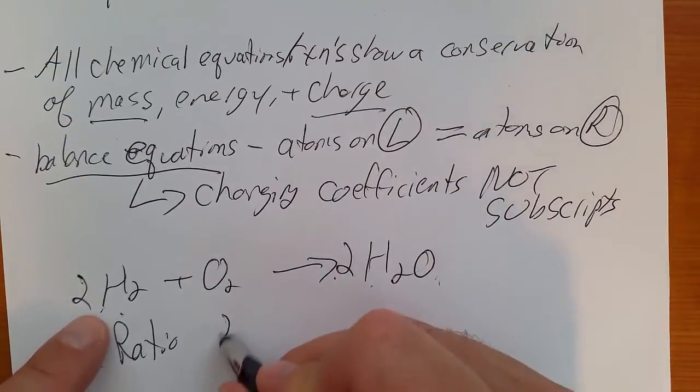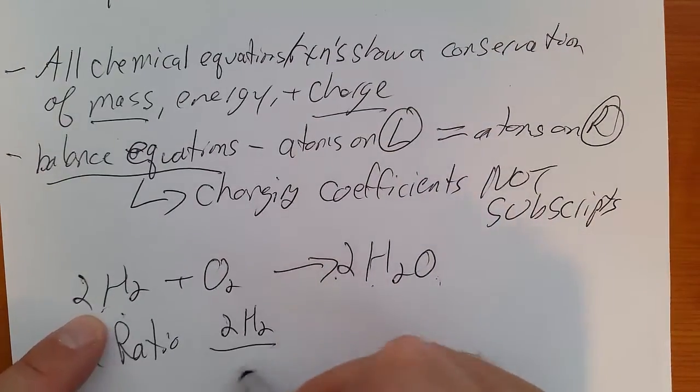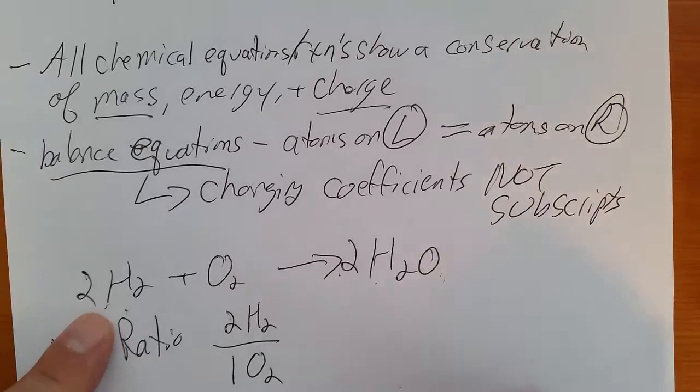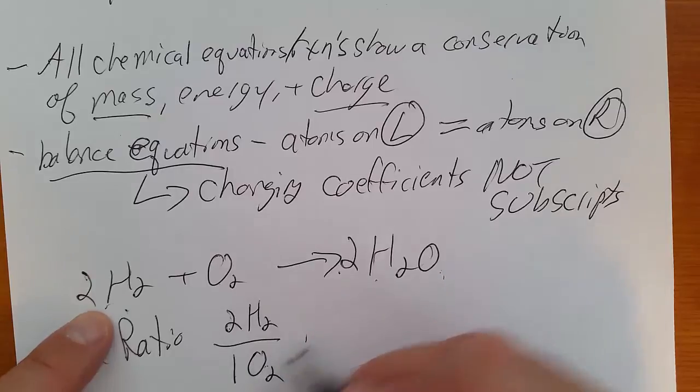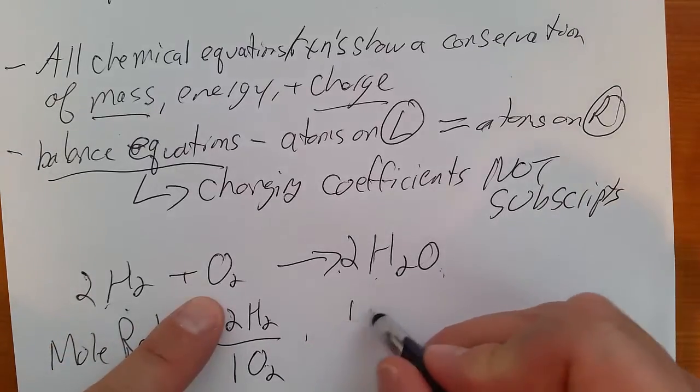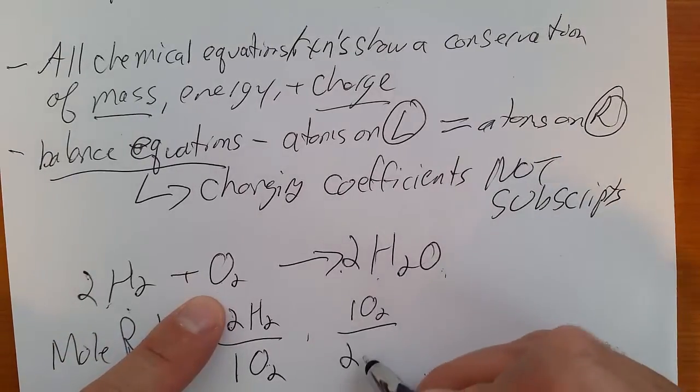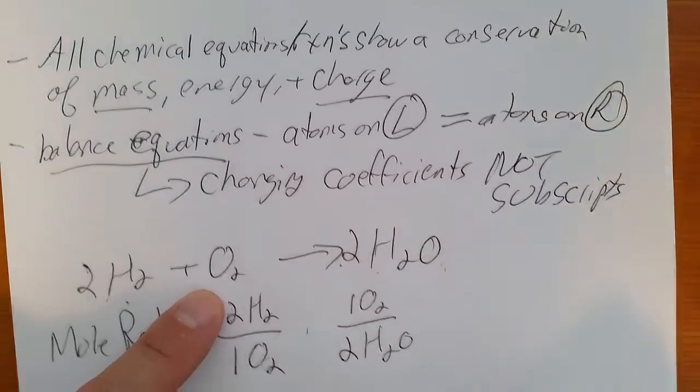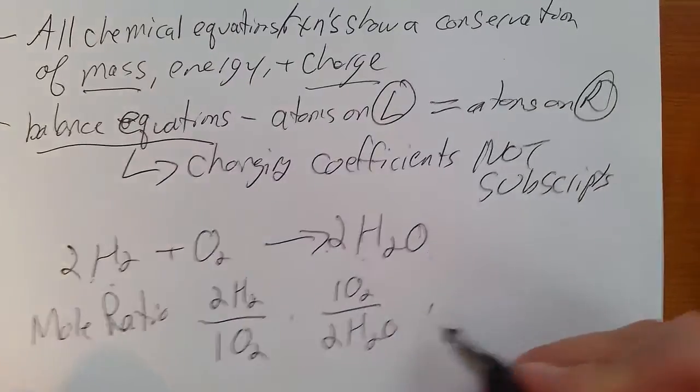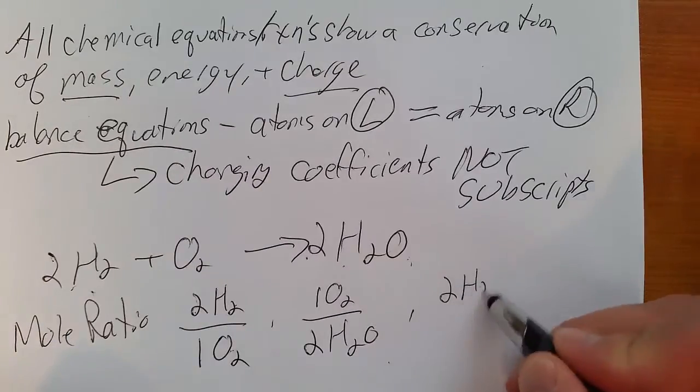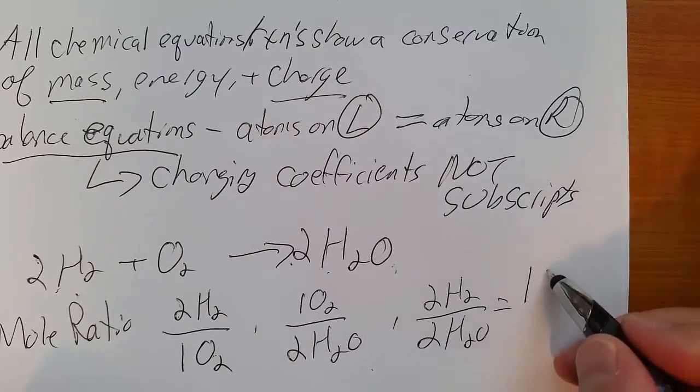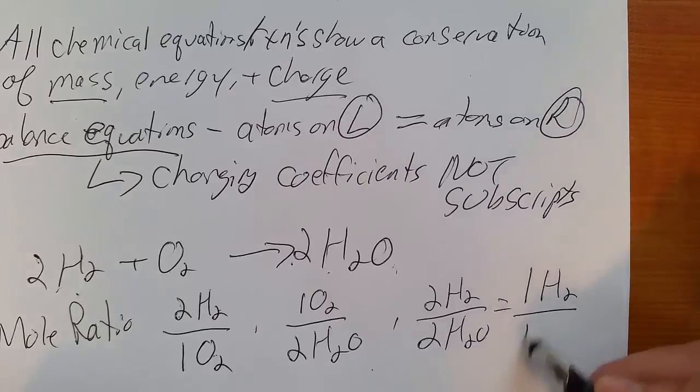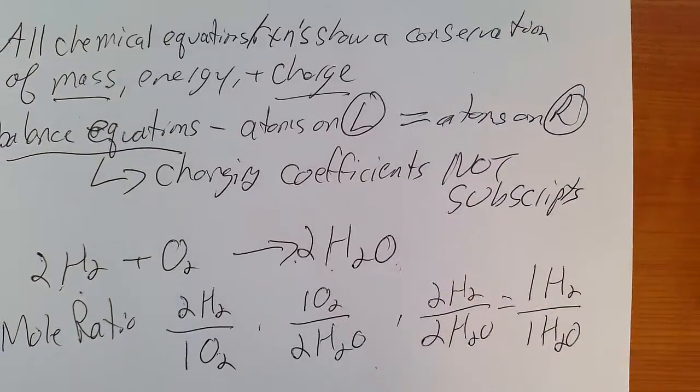Now these coefficients in front can give us what's called our mole ratio. There's 2 hydrogens for every 1 oxygen. There will be a mole ratio, 2 moles of hydrogen to 1 mole of oxygen. There's 1 mole of oxygen to every 2 moles of water, that will be another mole ratio. There's 2 moles of hydrogen to every 2 moles of water, which is the same as 1 to 1.